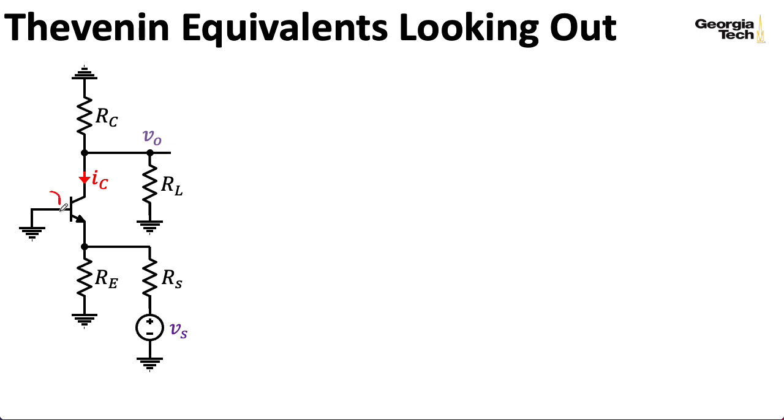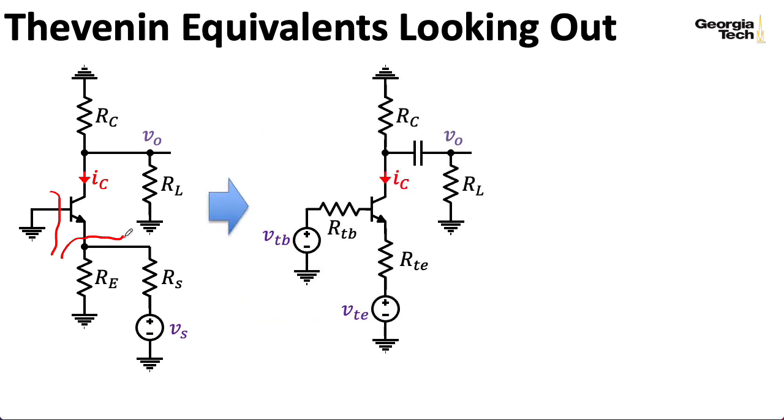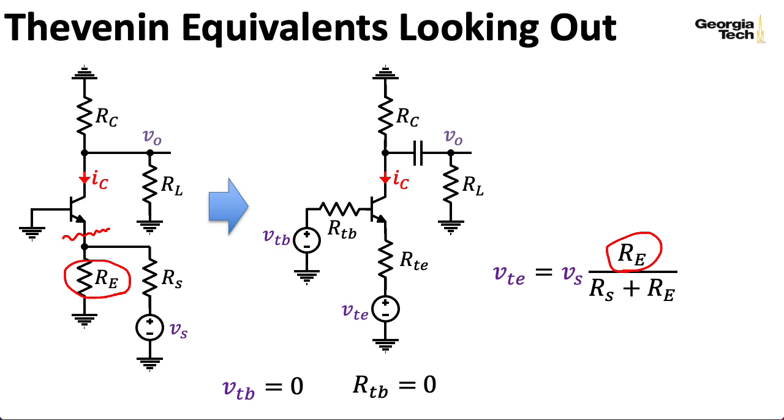So let me replace all the stuff over here. Well, there isn't very much over there. And all the stuff down here with some Thevenin equivalent circuits. Now, the Thevenin equivalent looking out of the base is pretty straightforward. We have a Thevenin voltage of zero and a Thevenin resistance of zero. But put a pin in this. I'll come back to this issue in a second. Remember that when we're computing a Thevenin equivalent, we essentially disconnect the line here. So the voltage we'll see at the emitter is just the result of a voltage divider. So I have RS plus RE, and I'm dividing the voltage down RE. So RE goes in the numerator.